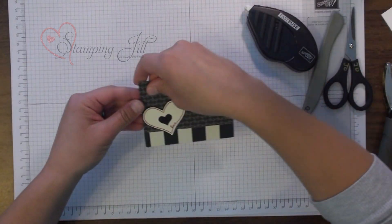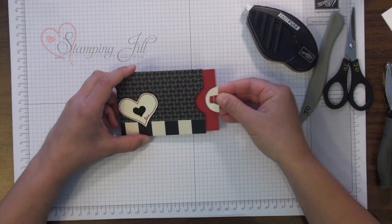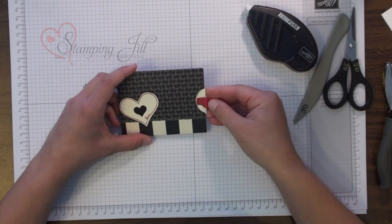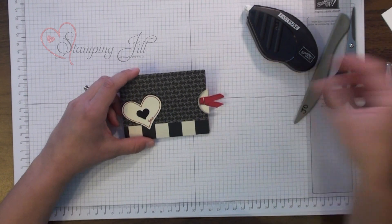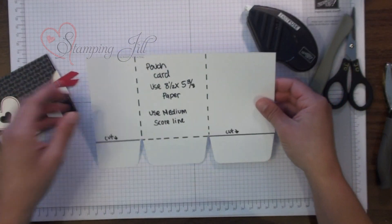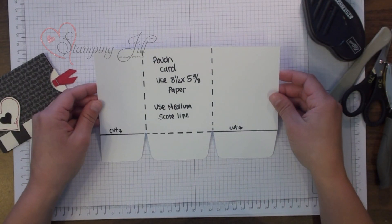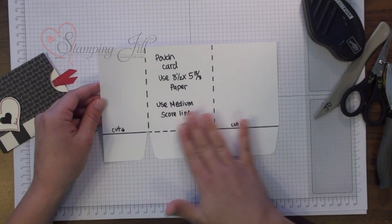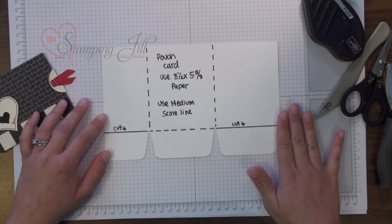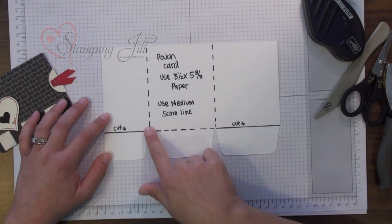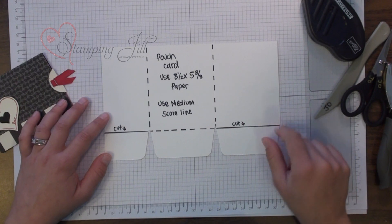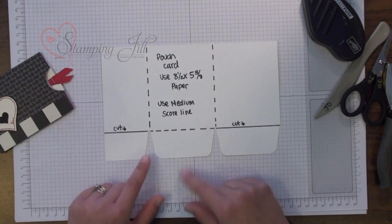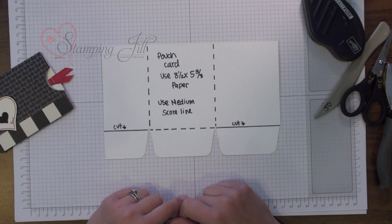Another idea I wanted to show was an envelope pouch card that you could use using the gift punch board. This is the paper size. I used an 8 1/2 x 5 3/8 piece of paper and I used the medium score line. So you're going to score your pouch card like so, but you're not going to use the side score lines. You're just going to use a medium score line and you're still going to do your punches like you would.